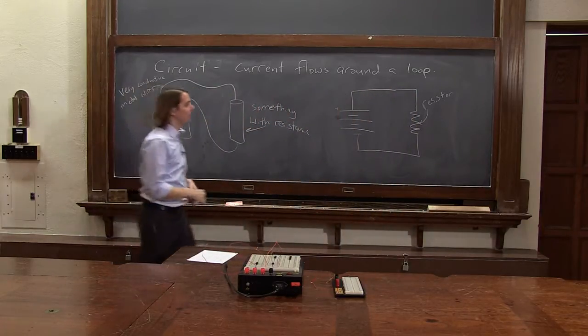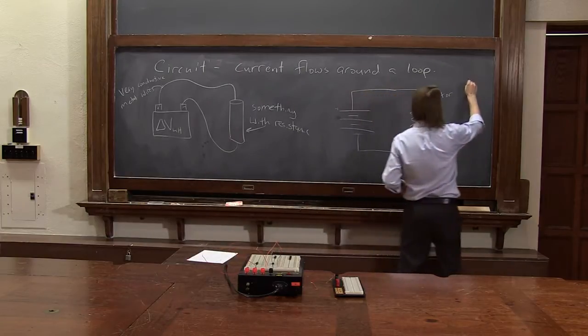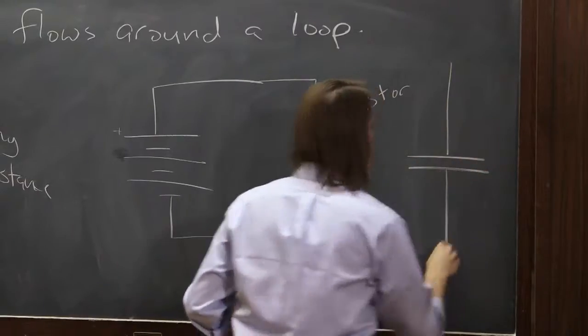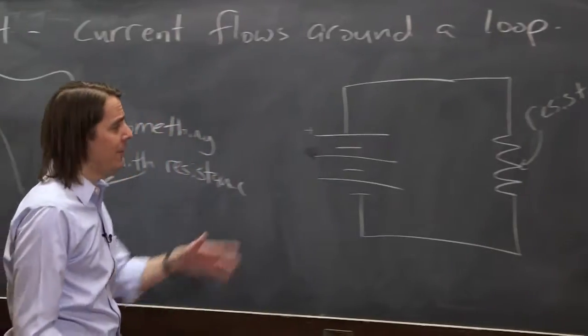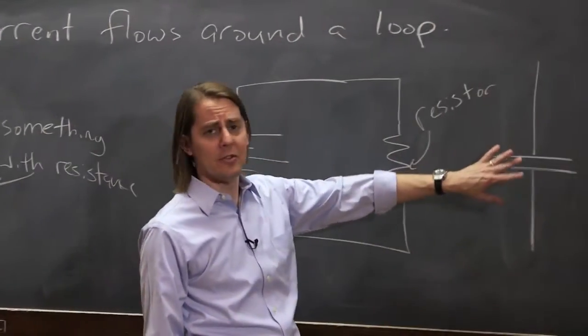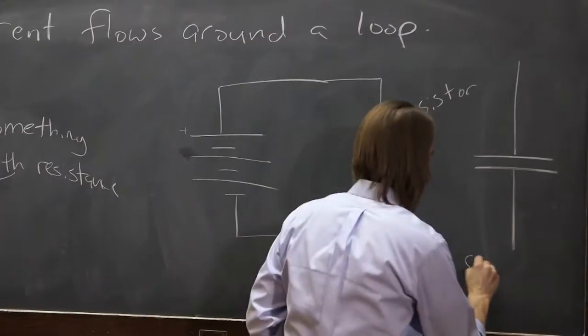We've also learned about another circuit element, capacitor. But you've got to be careful. It looks like a battery, except that the two plates are the same size. Because the capacitor is a parallel plate capacitor. So this is the capacitor.